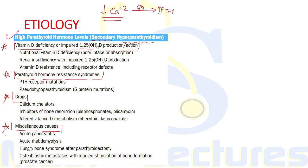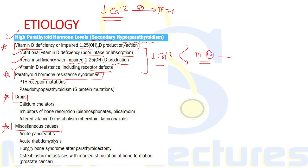Vitamin D deficiency or impaired production can be due to nutritional causes — either poor intake or absorption — renal insufficiency with impaired 1,25-dihydroxyvitamin D production, or vitamin D resistance including receptor defects. In all these cases, the degree of hypocalcemia is not as severe as with hypoparathyroidism, because the parathyroid glands are normally functional and lead to a compensatory increase in PTH.